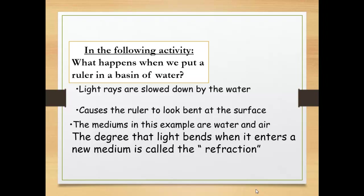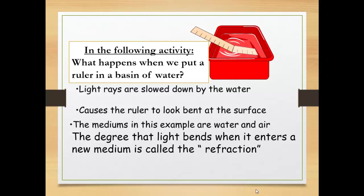In the following activity, what happens when we put a ruler in a basin of water? When we put it, it seems broken but it is not broken. Light rays are slowed down by the water, causing the ruler to look bent at the surface. The mediums in these examples are water and air. The degree that light bends when it enters a new medium is called the refraction. So why does this ruler seem to be broken or bent? Because of refraction of light.